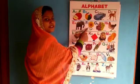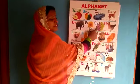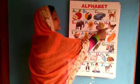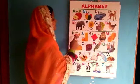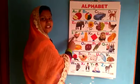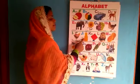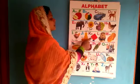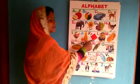F for flower, G for grapes, H for hand, I for ice cream, J for juice.